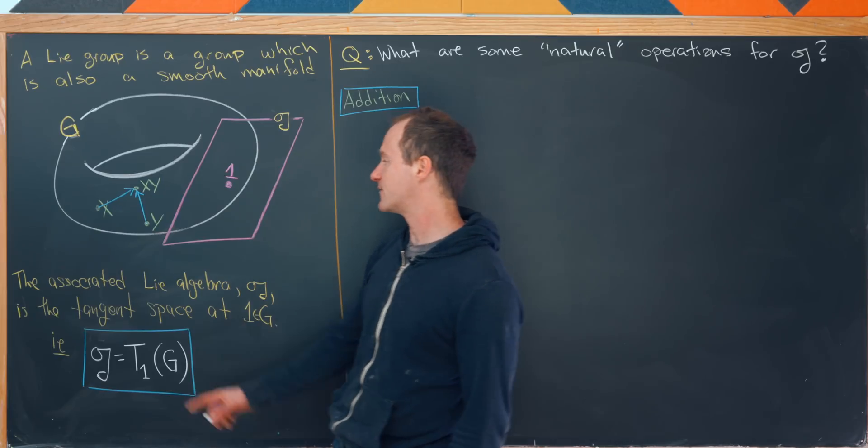Once we have that, we can start finding identities that this bracket satisfies, which would eventually lead you to the Jacobi identity. After that, all you have to do is abstract the whole thing and you get the textbook definition of a Lie Algebra. And that's a good place to stop.